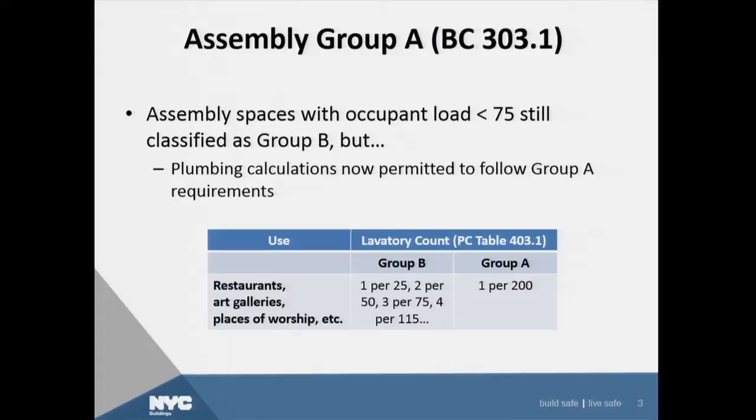As you can see in the example given for an art gallery, which is definitely an assembly, if you classify it as B, it's one per 25, two per 50, and it could be quite excessive in terms of toilets required. However, if you go to an A, you see it's only one per 200.